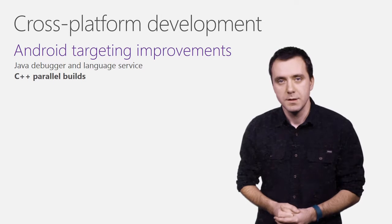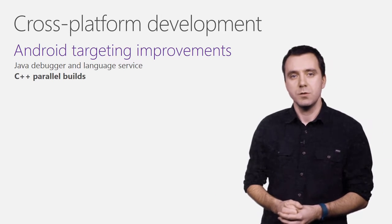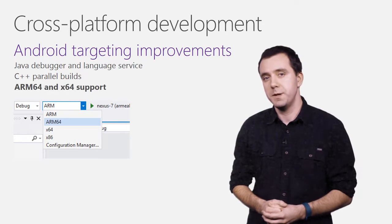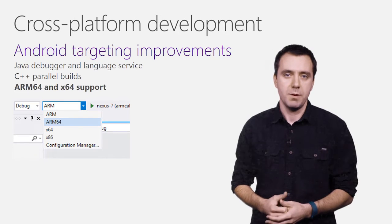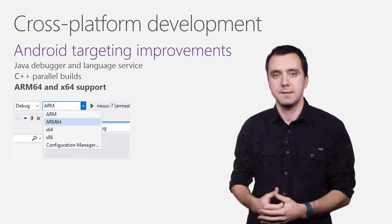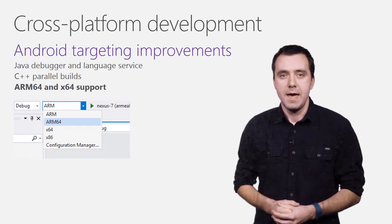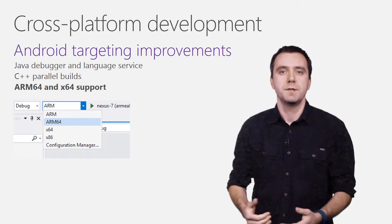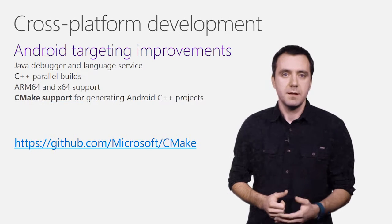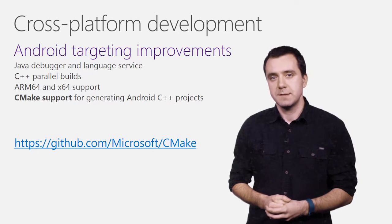On the C++ front, you'll notice new build throughput improvements. In addition to project-level parallelization, we now allow file-level parallelization of builds. With 64-bit growing in importance in the mobile space, we're adding support in Android for targeting ARM64 and X64. All project templates will list the new platforms, and for your existing projects, you can use Configuration Manager to add them manually. For those of you that use CMake, we are also providing a new CMake project generator for Visual Studio projects targeting Android.